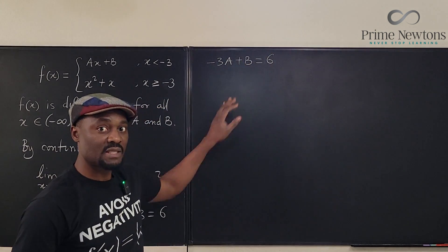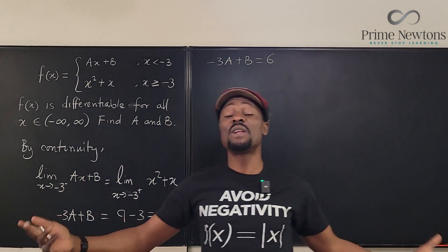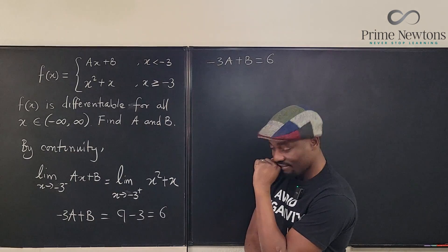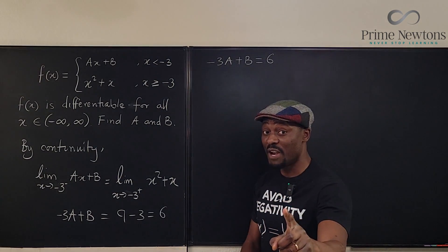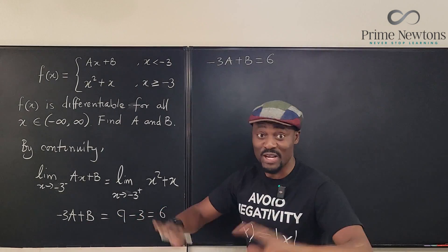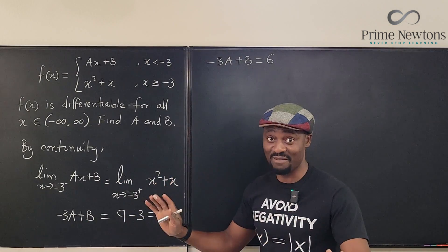We have minus 3a plus b is equal to 6. We're going to keep that equation because we have to start thinking, what else do we know? We also know that you could have found this equation any other way, but I like this one that I have, okay?